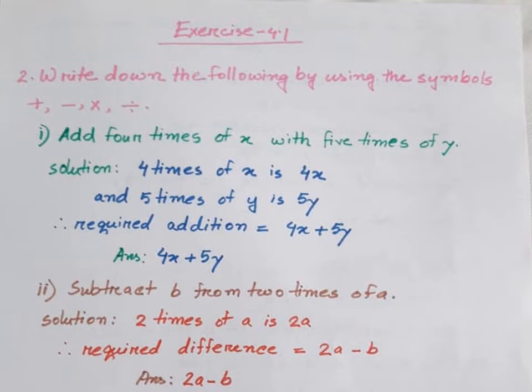Solution: 4 times of x means 4 into x, that is 4x. And 5 times of y means 5 into y, that is 5y. The question is to add 4 times of x with 5 times of y. So the required addition is equal to 4x plus 5y. Answer: 4x plus 5y.